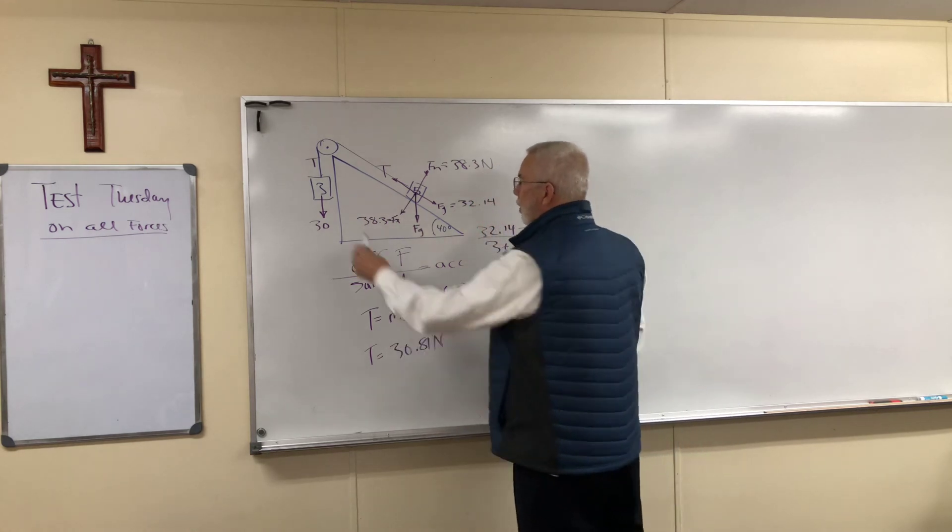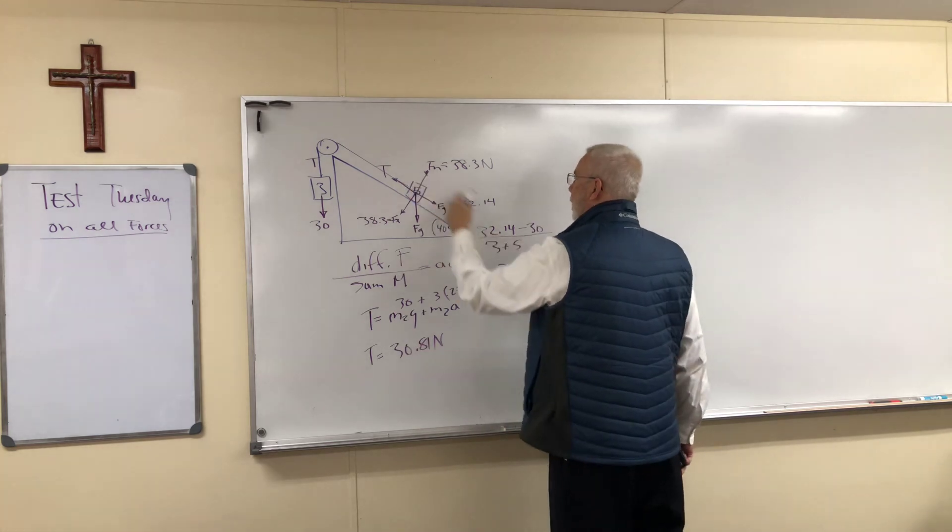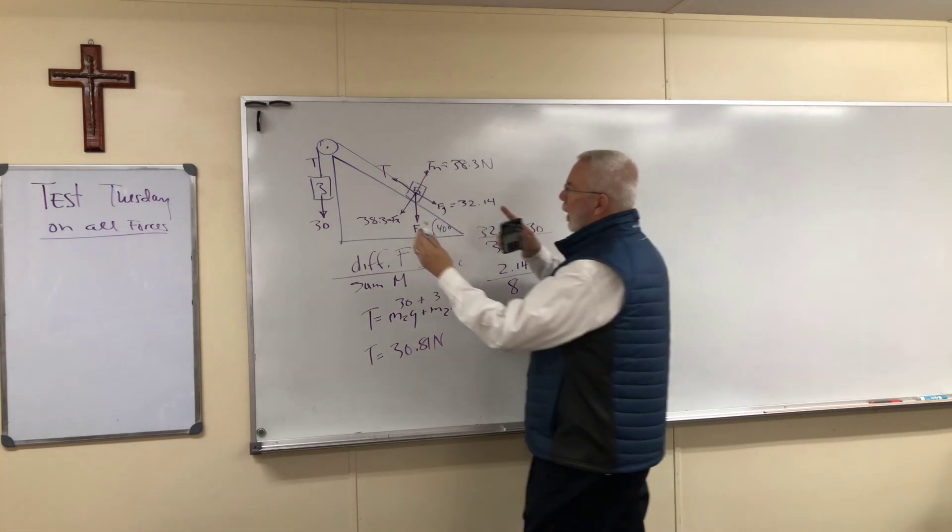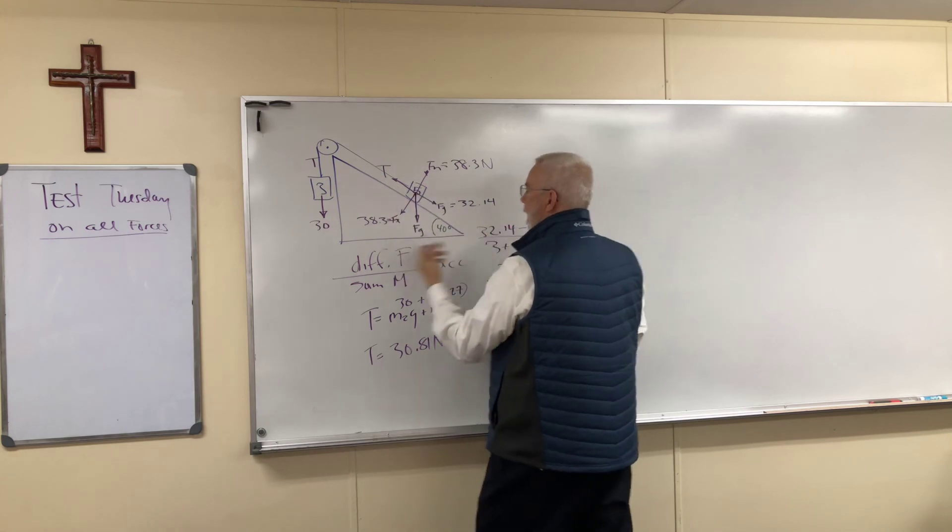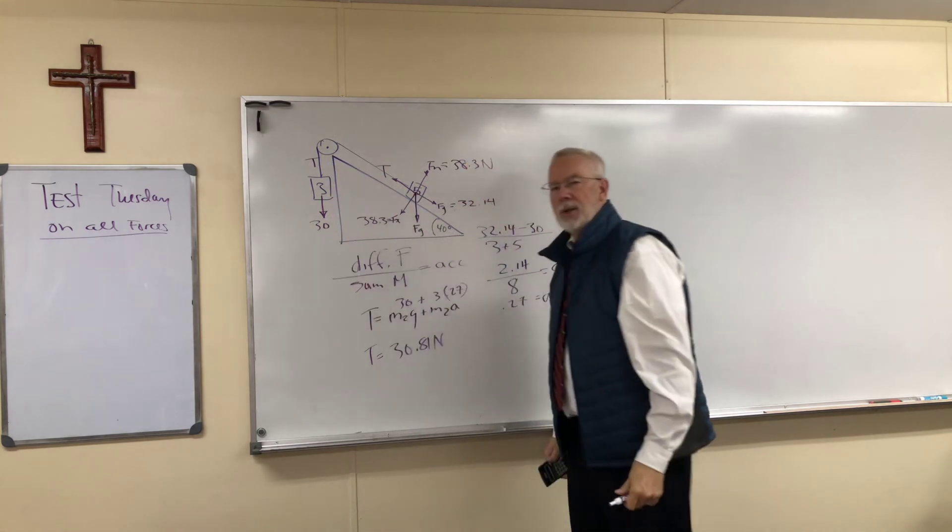It's a little bit larger than 30 here, it's a little bit less than 32, and so we would expect this one to slide down, this one to move up ever so slowly. Does everybody see that?